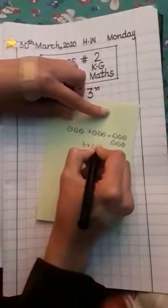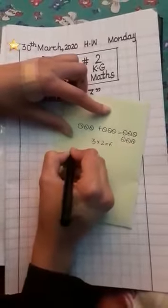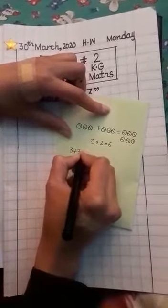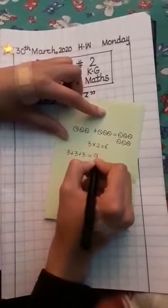In the language of tables: three twos are six. Likewise, three plus three plus three will give us nine.